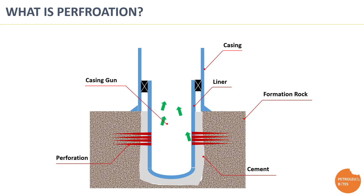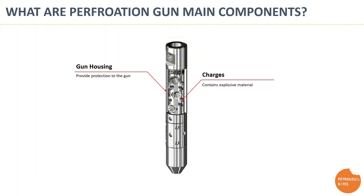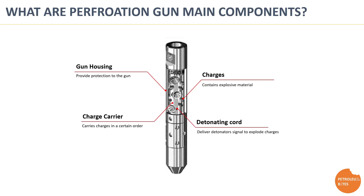A perforation gun consists of a gun housing, which is a metal shroud that provides protection to the gun charges during running operations in the wellbore. The gun may have different lengths depending entirely on the required interval of the formation to be opened. The charges contain explosive material which explodes to punch through the casing and create a perforation tunnel. The charge carrier carries the charges in a certain order to accommodate the required job application. The detonating cord extends along all charges to deliver the detonation signal from the detonator to fire all charges almost instantaneously.